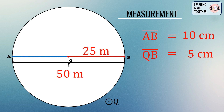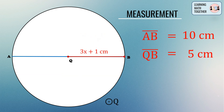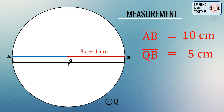Last example: the radius is given to be 3x + 1 centimeters. We do the same — double it to get the length of the diameter. So we have (3x + 1) centimeters times 2, which equals 6x + 2 centimeters.